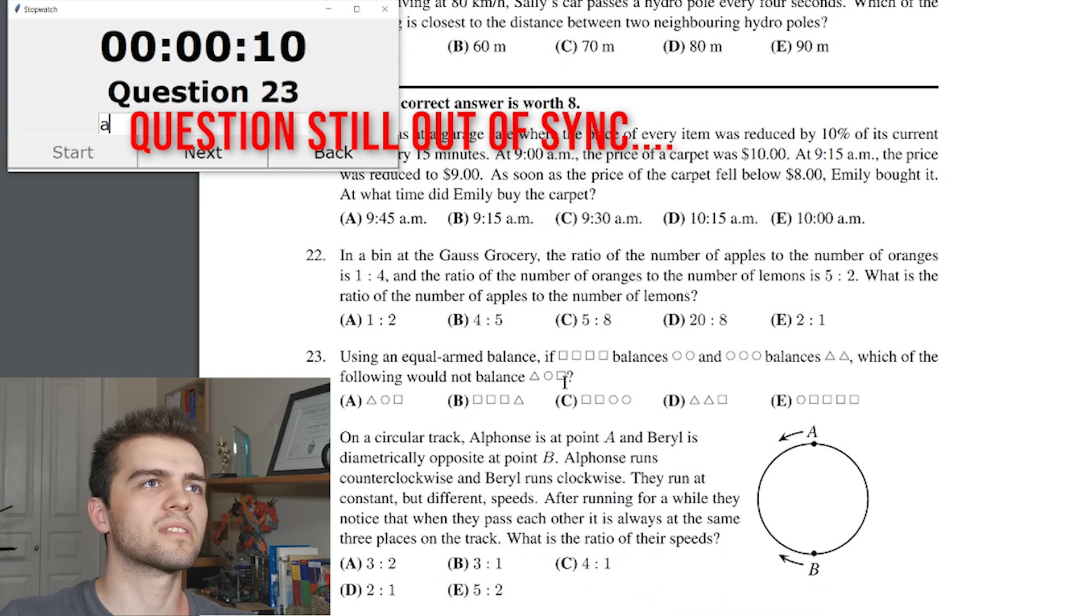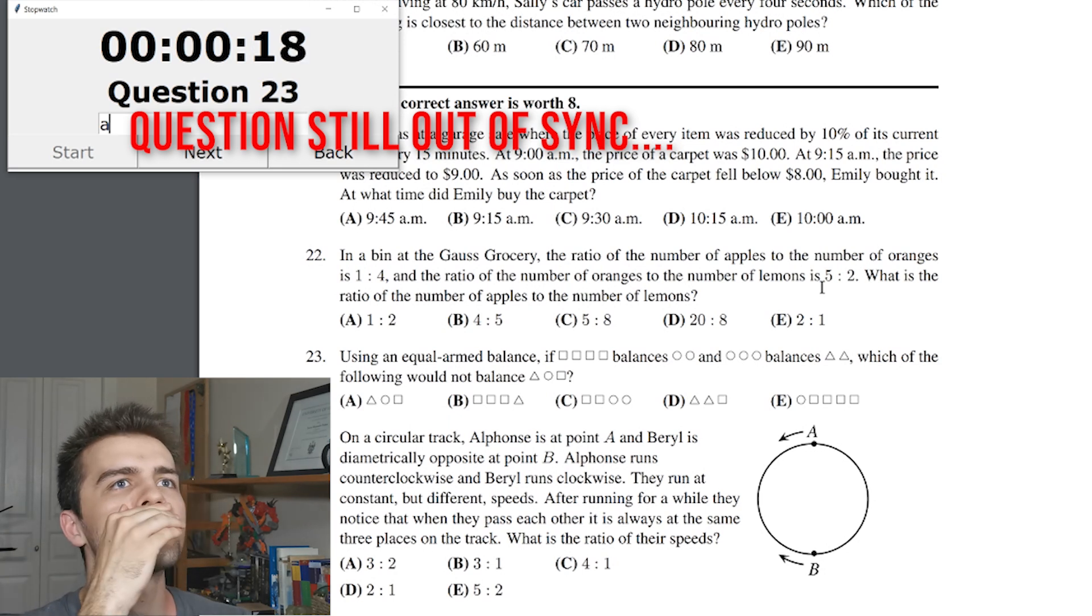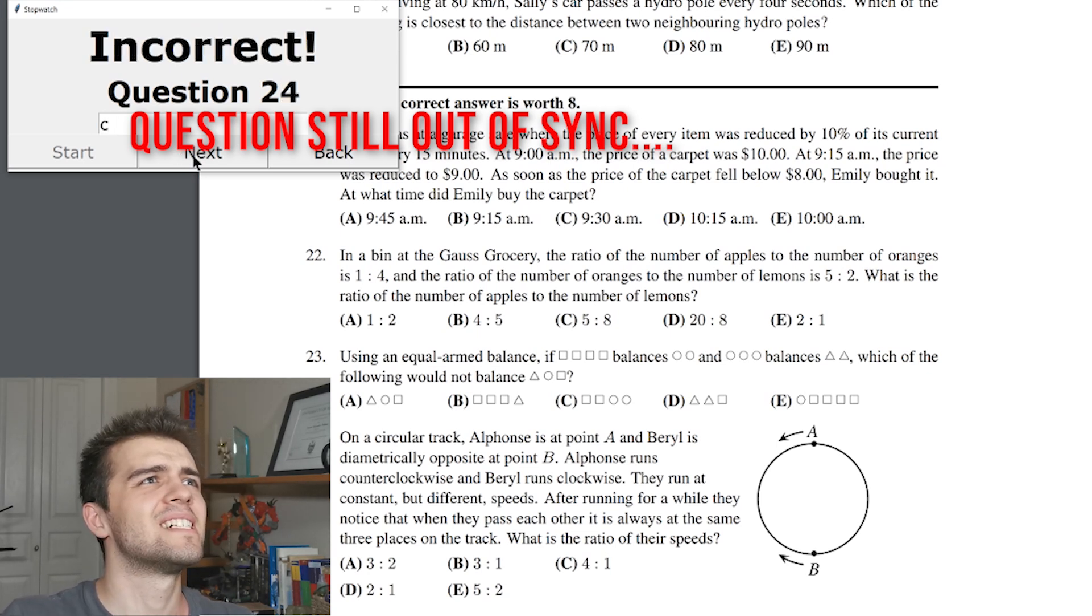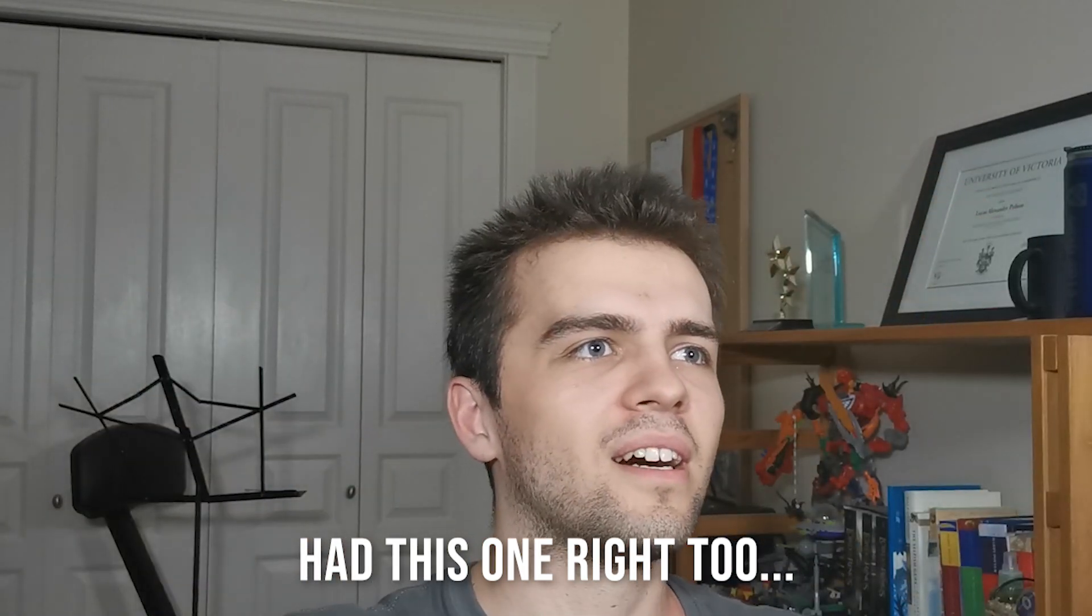In the bin at a gross, gross, gross grocery, the number of apples, ratio of the number of apples to the number of oranges is one to four and the ratio of the number of oranges to lemons is five to two. What is the ratio of apples to lemons? Well, I have apples to oranges. I also have... Ooh, I have five to 20 apples to oranges and five to two, five to 20 apples to oranges and 20 to eight. Five to eight. It's gotta be C. Please let me get one of these correct. No. Oh, all right.